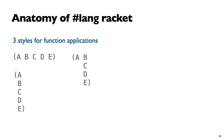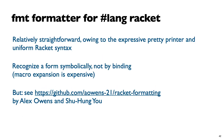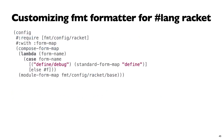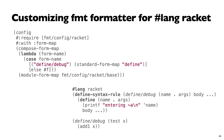I don't have much time left so I'll skip the details, but using the design recipe I created the Racket formatter. One thing to note is that it's pretty straightforward using the explicit reader. It recognizes forms symbolically because we want it to be fast — we don't want to spend time doing macro-expansion. Although there are projects that try to use the expander to get more information. You can also customize the formatting behavior, which I'll skip for now.